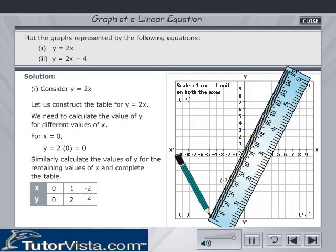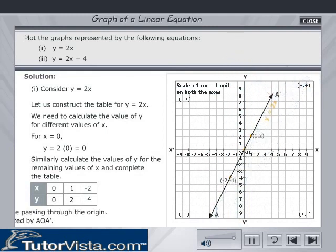Join any two points and observe that this line also passes through the third point. Therefore, y is equal to 2x is a line passing through the origin. It is represented by line AA'.